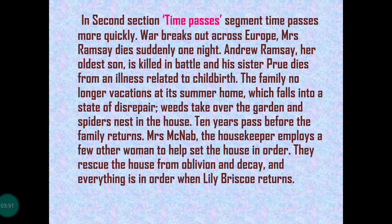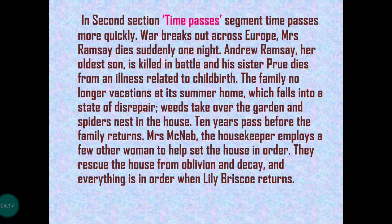In the second section, Time Passes, time passes more quickly. War breaks out across Europe. Mrs. Ramsey dies suddenly one night. Andrew Ramsey, her oldest son, is killed in battle, and her daughter Prue dies from an illness related to childbirth. The family no longer vacations at its summer home, which falls into a state of disrepair. Weeds take over the garden and spiders nest in the house. Ten years pass before the family returns. Mrs. McNab, the housekeeper, employs a few other women to help set the house in order. They rescue the house from oblivion and decay, and everything is in order when Lily Briscoe returns.